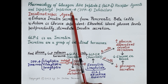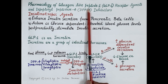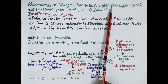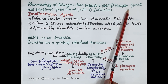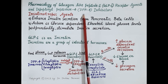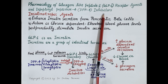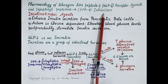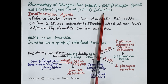Hello students. In today's video we are going to discuss pharmacology of glucagon-like peptide 1, in short GLP-1 receptor agonist, and dipeptidyl peptidase 4, in short DPP-4 inhibitors. These are anti-diabetic drugs used as add-on therapy, that is used in combination with other anti-diabetic drugs in the treatment of poorly controlled type 2 diabetes mellitus.